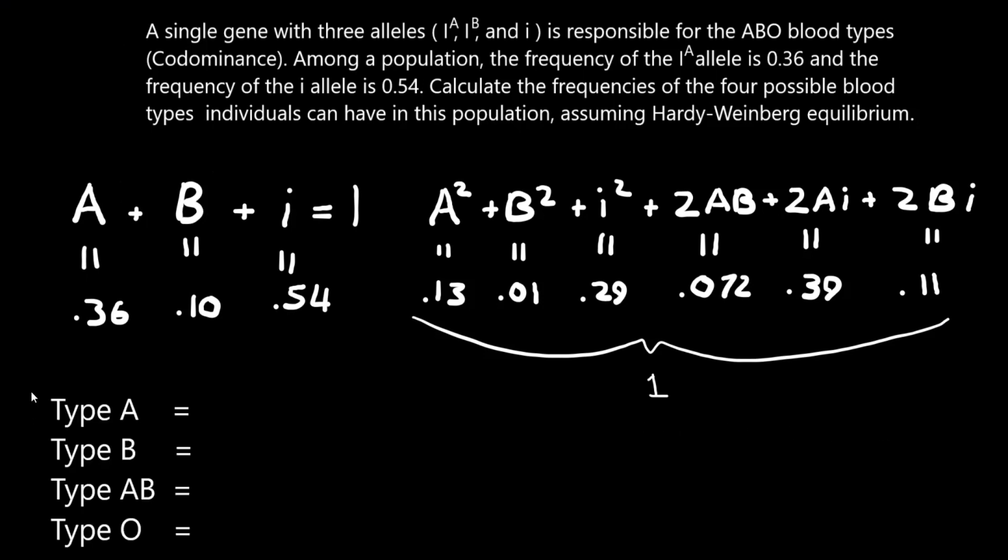So now let's determine the frequencies of our blood types here. So the A blood type, this will be an individual with two dominant A alleles. So that's 0.13, and an individual with a dominant A allele and a recessive I. So just add them up, 0.52, that's 52%.